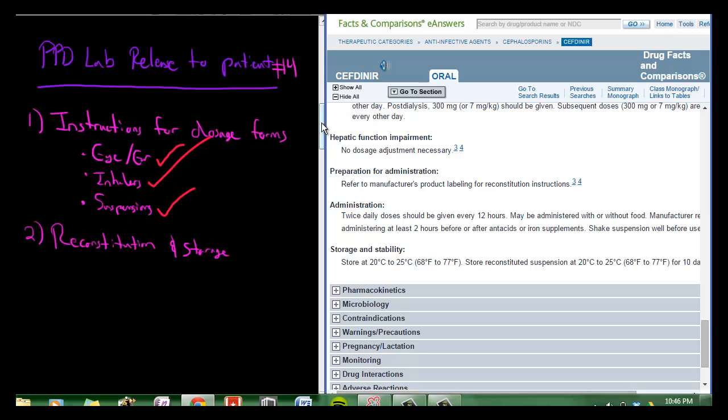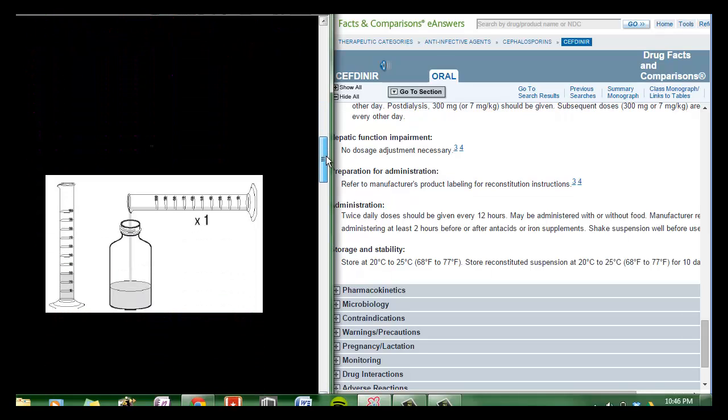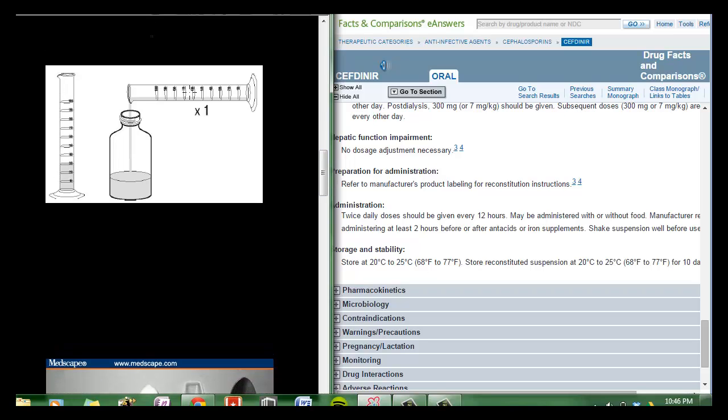The final thing I'm going to talk about is reconstitution and storage, which we've kind of went into here with the Seftonir example. Just remember that there are powders or other forms that need to be reconstituted with water or alcohol. Make sure you're measuring and following the instructions that are on the back of the label, or you can use these sites to find out the correct amount of water or alcohol that needs to be put in.